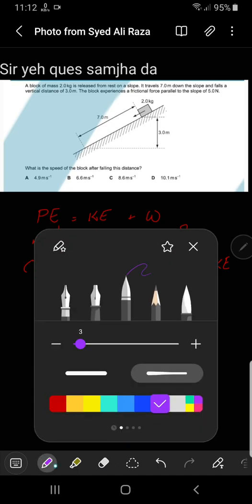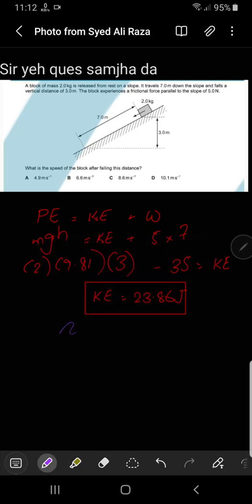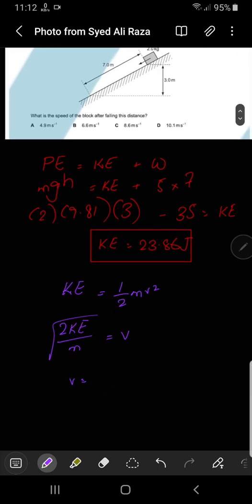Now the kinetic energy formula, which is very common, is half MV squared. So 2 times kinetic energy over M, take the root, equals V.